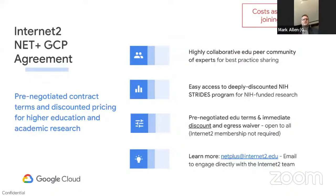There's an Internet2 Net Plus GCP agreement that was pre-negotiated with four universities to provide benefits to members and non-members. The biggest thing: if you join through Internet2, not only will your NIH workloads get the 25% discount, but any non-NIH workload will receive a 5% discount on compute and storage as well. There are also many other benefits. We invite you to reach out at the Net Plus at Internet2 email address. You'd work with Bob Flynn from Indiana University, one of the initial four universities that helped negotiate this contract — he's very knowledgeable and customer-focused.